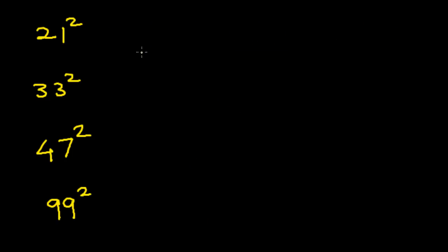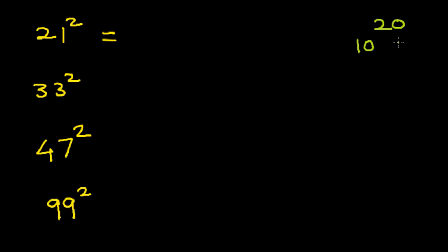Let's take a few more examples, but this time we will use a different base. For 21 squared, we can select the base as 20. Our real base is 10, so when we divide 20 by 10, we get 2. This will be our multiplying factor.